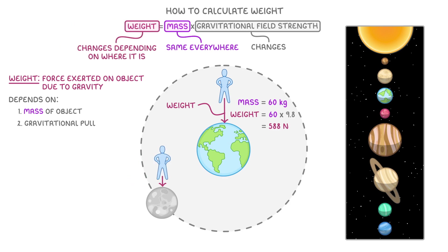For instance, say this person was on the Moon instead of on Earth. While their mass would still be 60 kg, as the gravitational field strength on the Moon is only 1.6, their weight would only be 60 times 1.6, so just 96 Newtons.